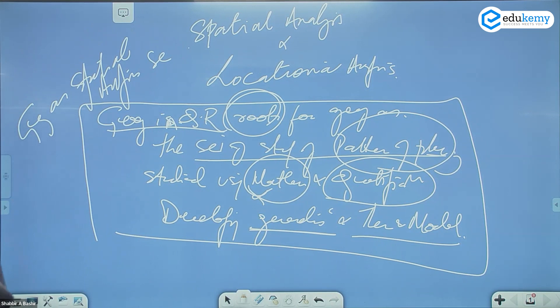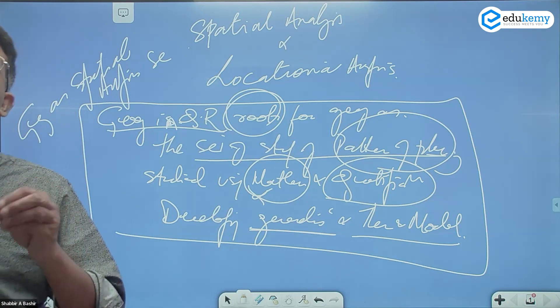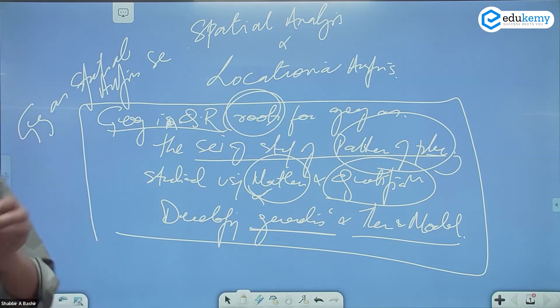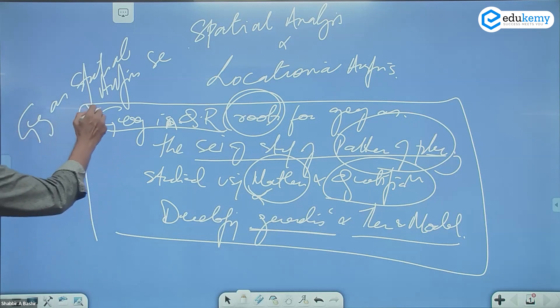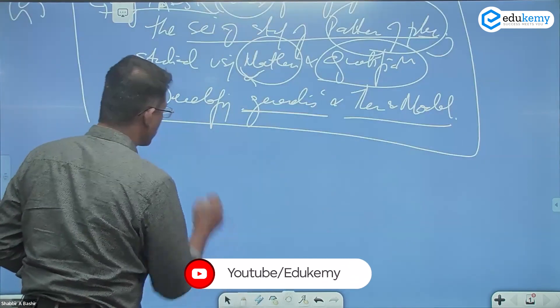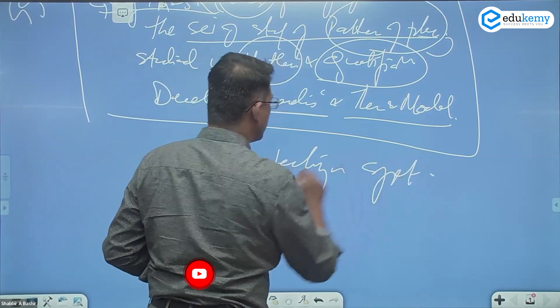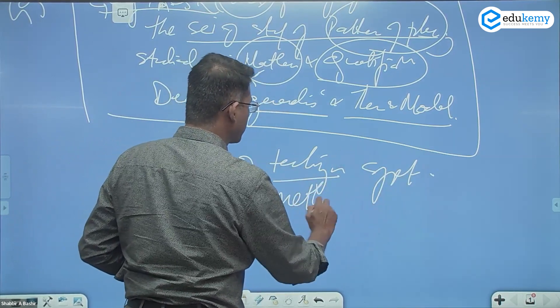Geography is becoming the analysis of space. Geography is developing laws and models using quantification. Geography is spatial analysis. To do this, one of the techniques suggested, one of the methods suggested.